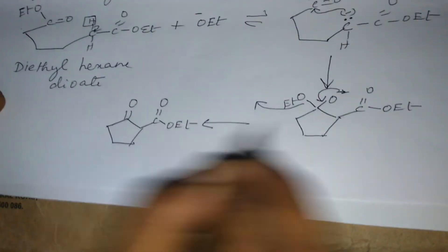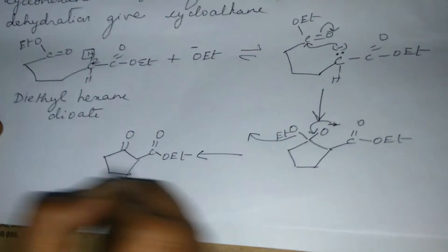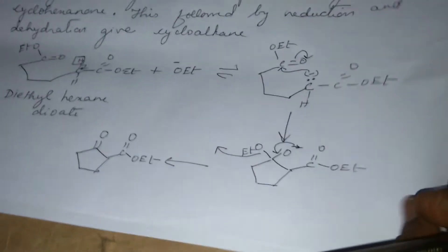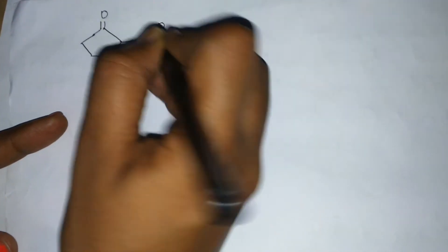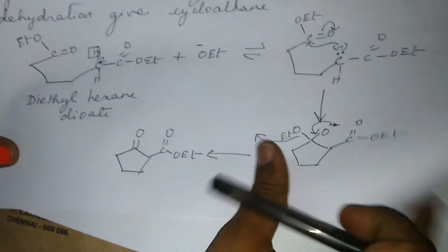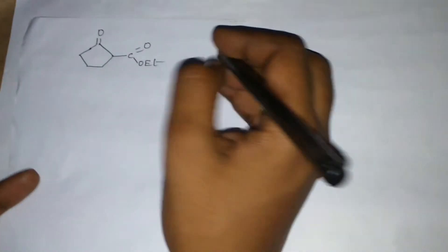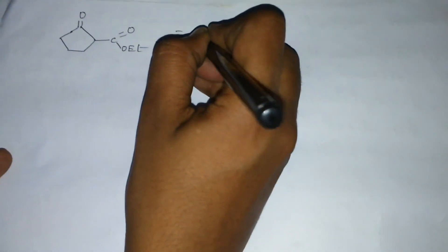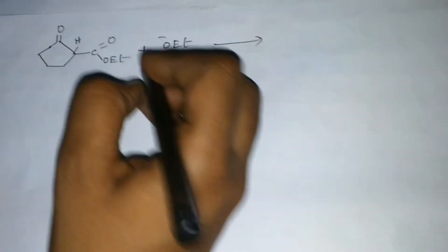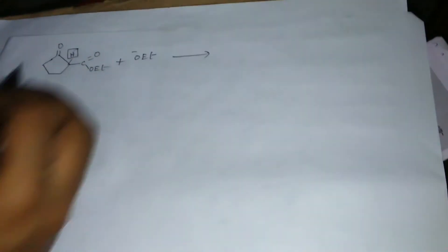Next step, the liberated O-Et... I will write the reaction in the next page. See, this is what we have obtained in the previous step, which I have written here. The liberated O-Et now takes a proton from this carbon, shifting this electron on the carbon.